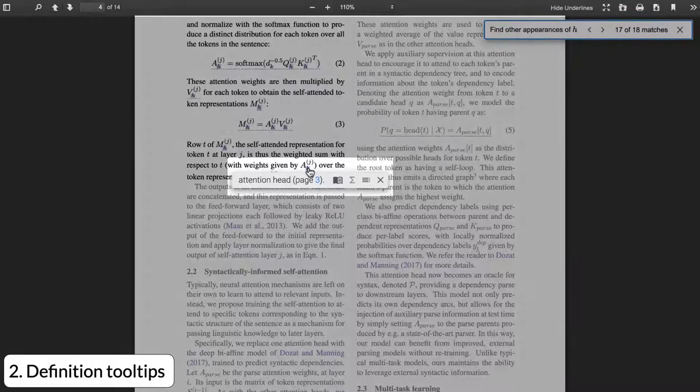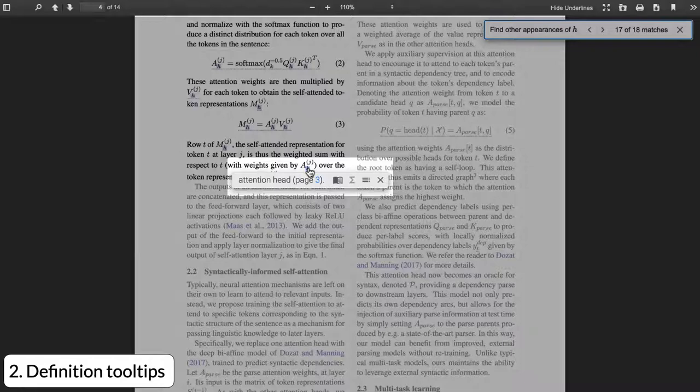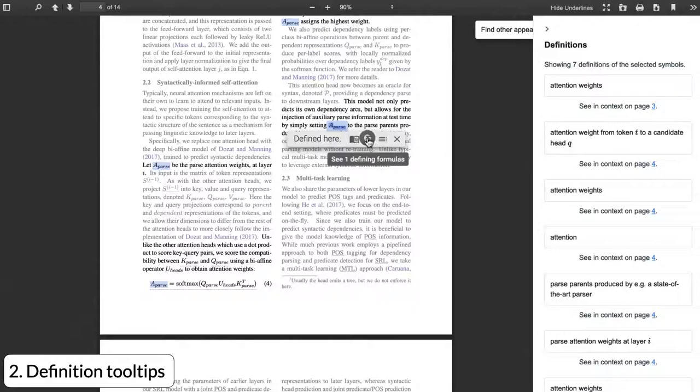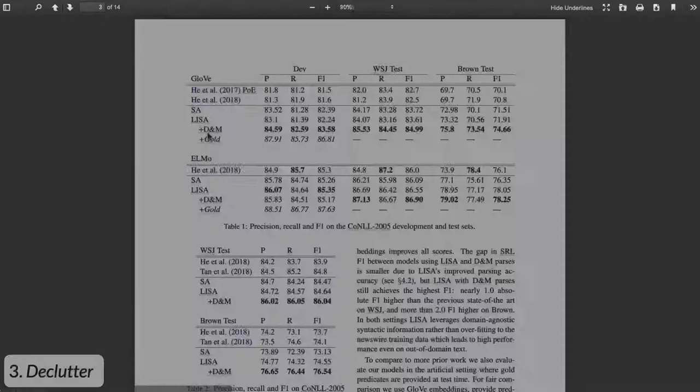Second, it shows compact definitions of terms in tooltips. These definitions are position-sensitive. That is, if the term has been defined differently in multiple passages, the most recent definition of that term is shown. Links accompany the definition, which take a reader to the definitions in context. And if a reader wants more information about the term, they can open a sidebar of all definitions, defining formulas, or usages of the term.